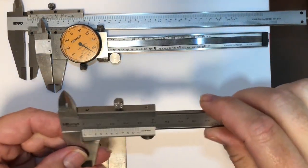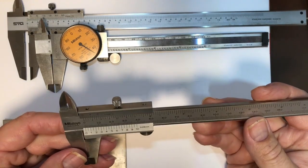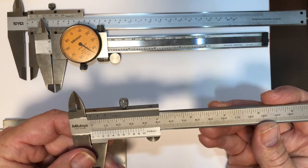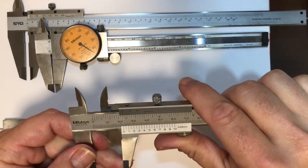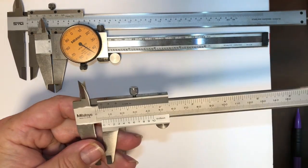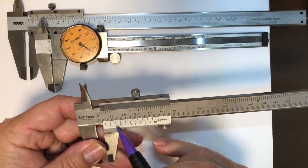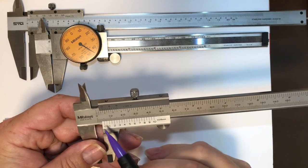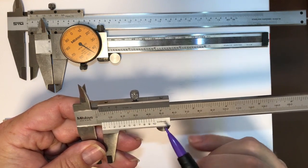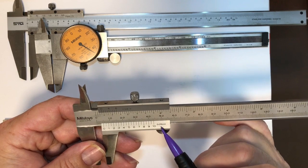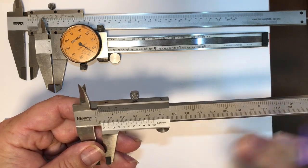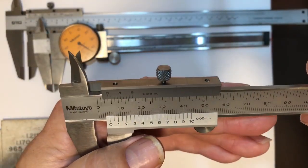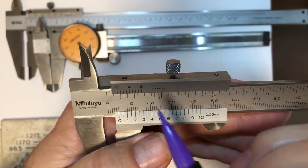Our next one here is a true vernier. A couple small problems with these, these can be a little bit, these are probably the most difficult to measure with. Let's take a look. The bottom is pretty standard: one millimeter, two millimeter, etc. all the way up. Your scale here, each one of these scales that line up on the vernier scale is worth 0.05 millimeter, standard same as on all of them.